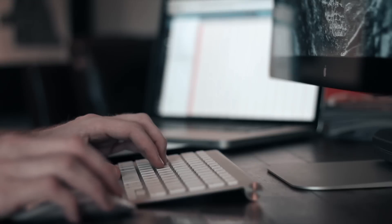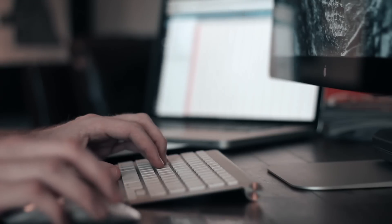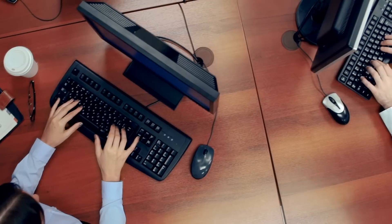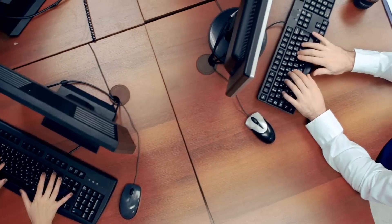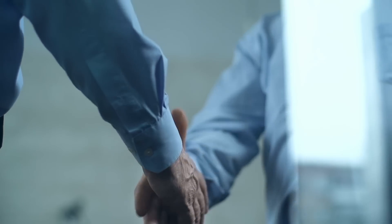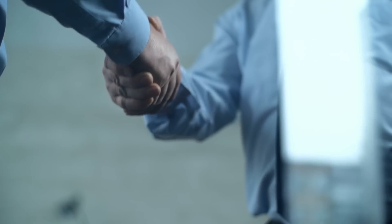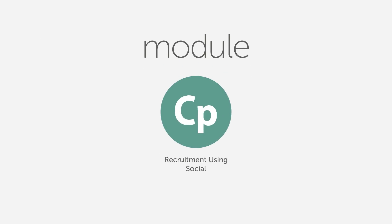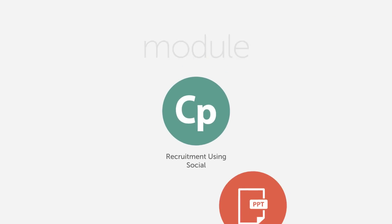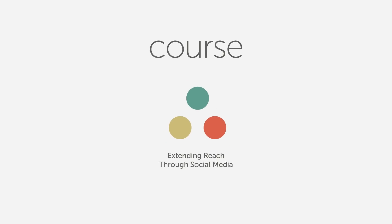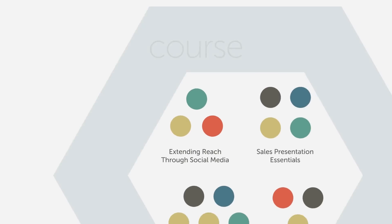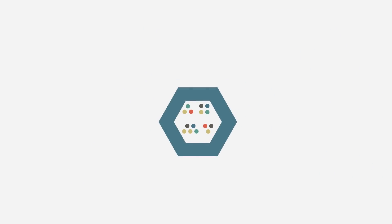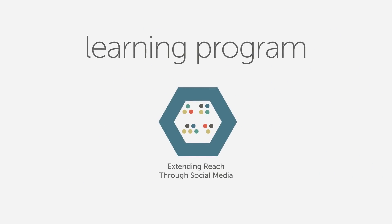Captivate Prime helps you think beyond individual courses and onto entire learning programs that you can design to fill skill gaps and meet business objectives. Start by creating a module out of any e-learning content, then group related modules into a course, and finally group courses together to form a complete learning program.